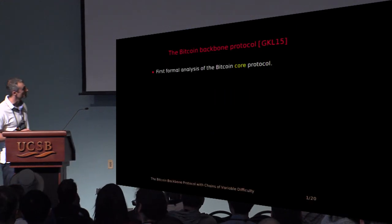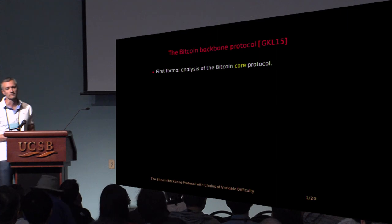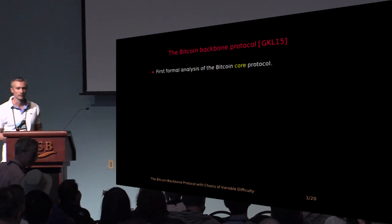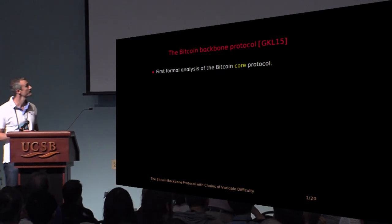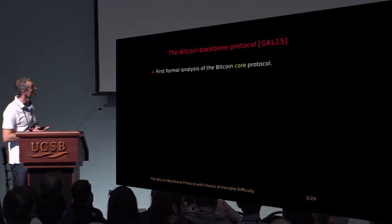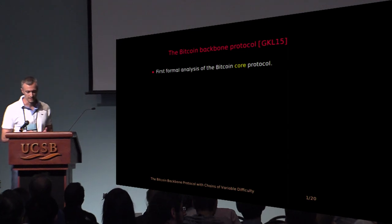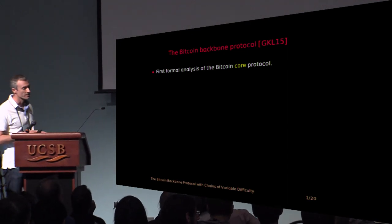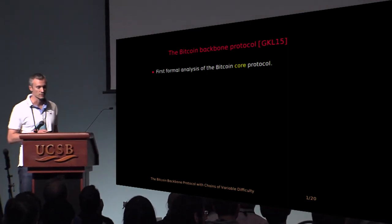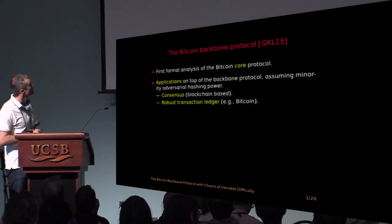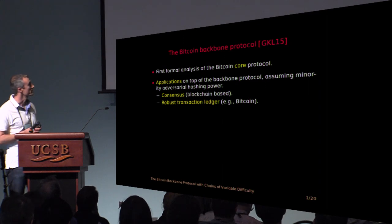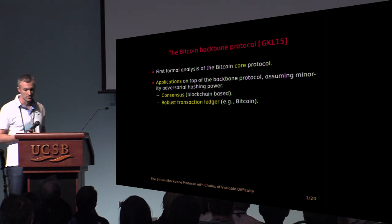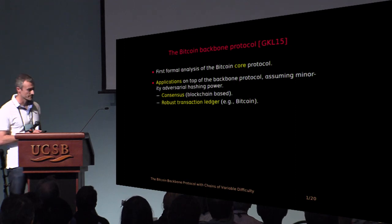It is based on previous work where we studied the protocol in a static setting where the number of parties was fixed. The core of the Bitcoin protocol was abstracted and for the first time we provided a formal analysis on its properties. We also saw how to build applications on top of the Bitcoin backbone protocol like consensus and a robust transaction ledger as in Bitcoin.